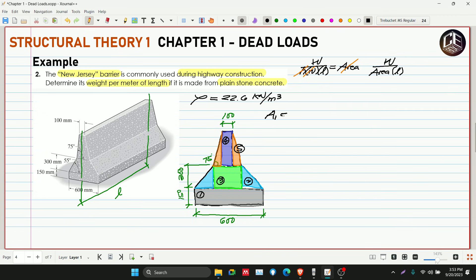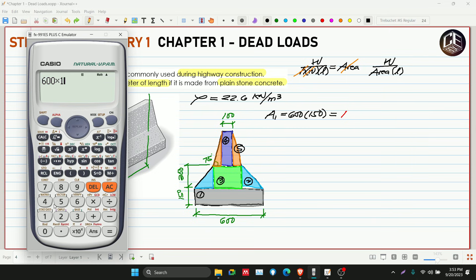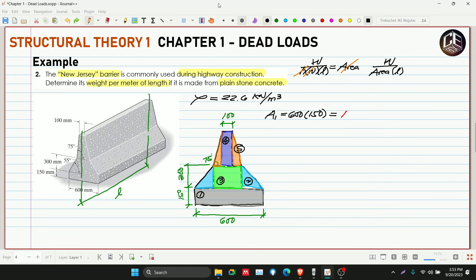So area 1, madali lang yan. This is 600 multiplied by 150. Ang gawin natin siguro is store na lang natin ito. 600 multiplied by 150, this is 90,000. Store natin sa A. So 90,000 millimeter squared. Nakastore na tayo sa alpha A.